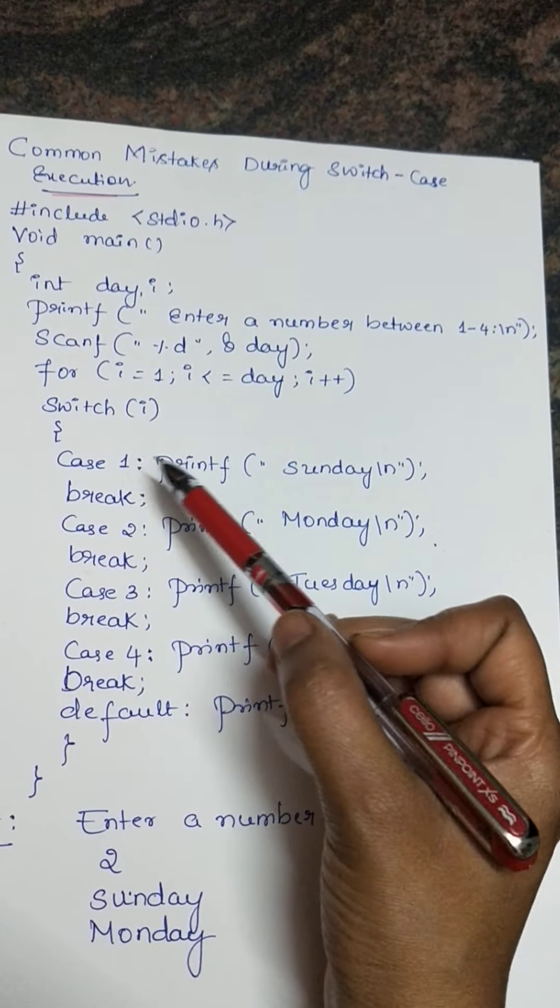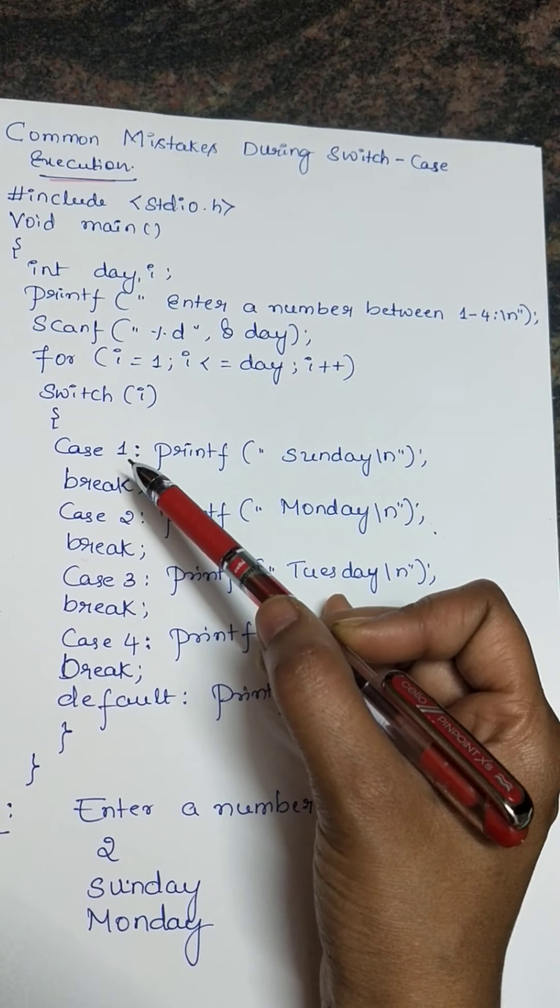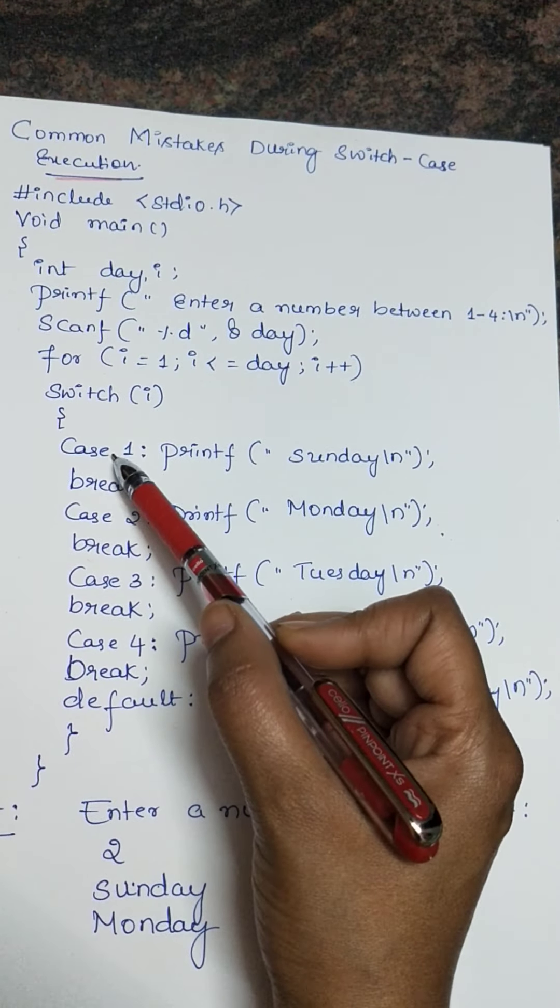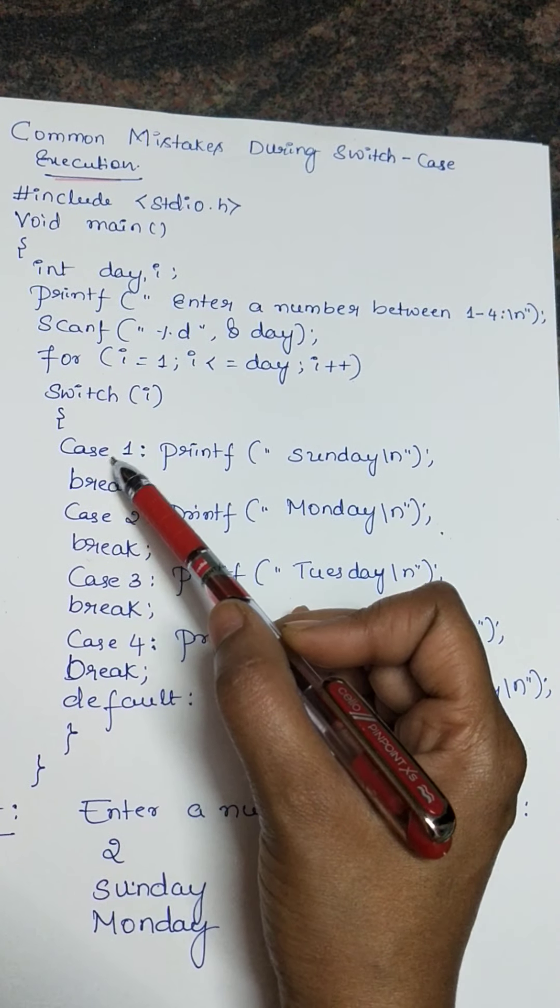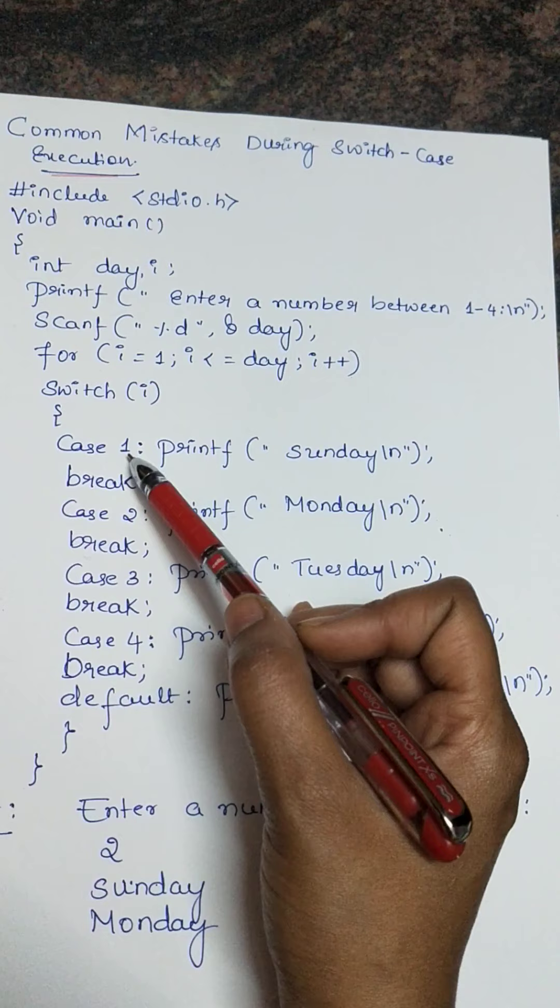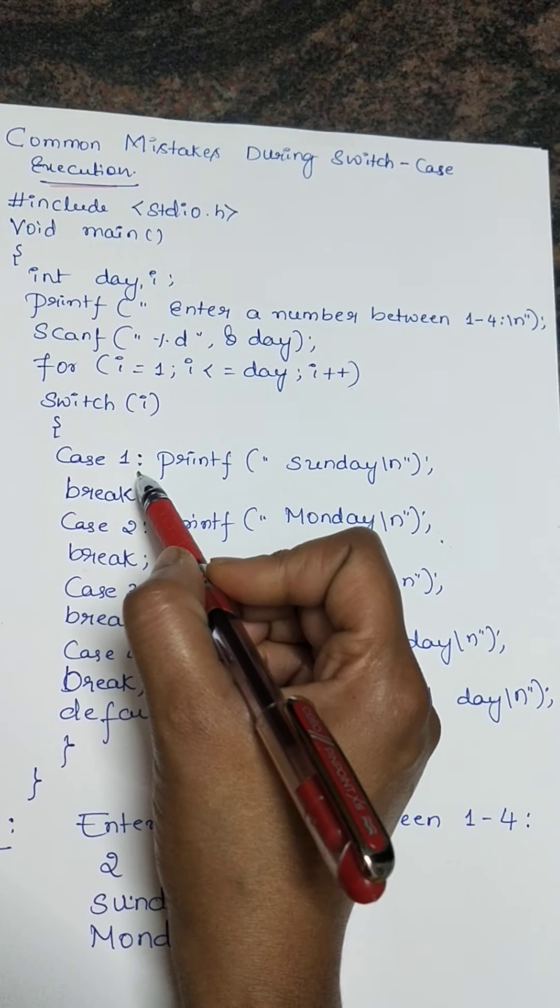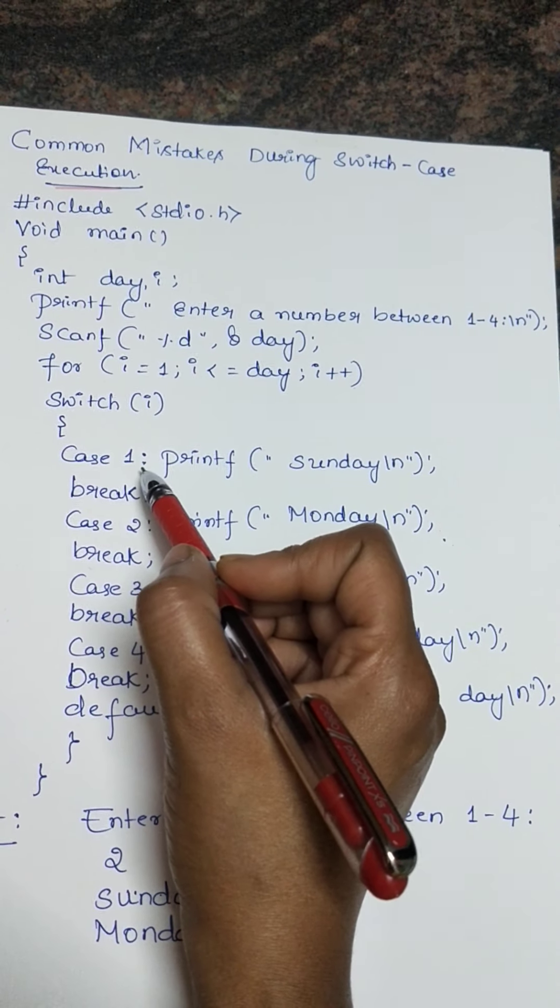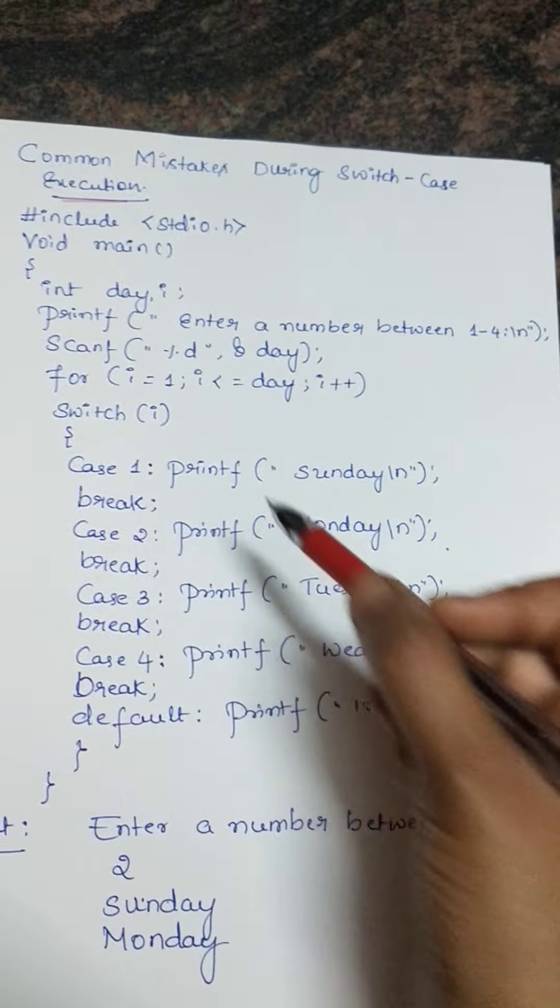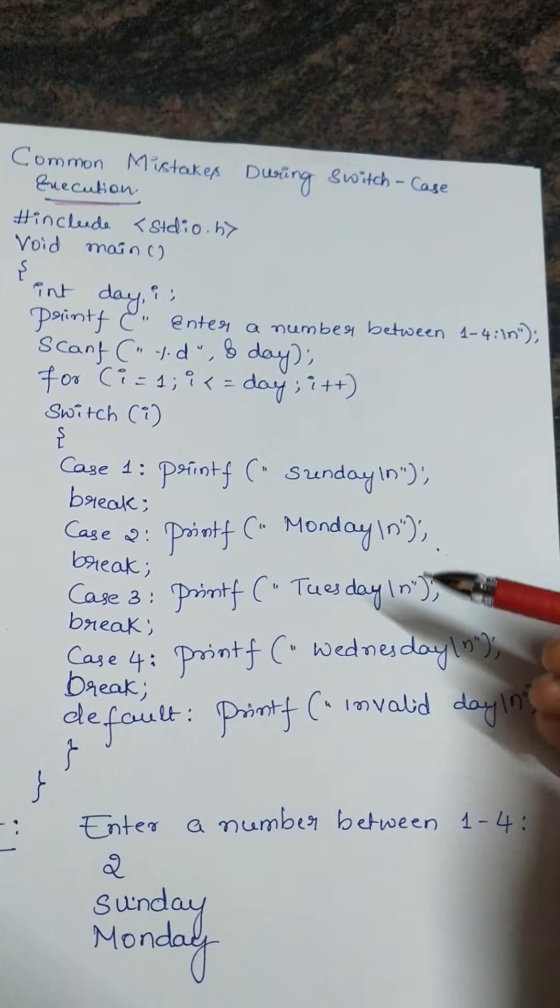Now let us see what are the common mistakes students will do. Students will forget to leave the space between case and 1. That is one common mistake. And here students will put the semicolon instead of colon. That is also one more mistake. Then during that case you don't get the proper output.